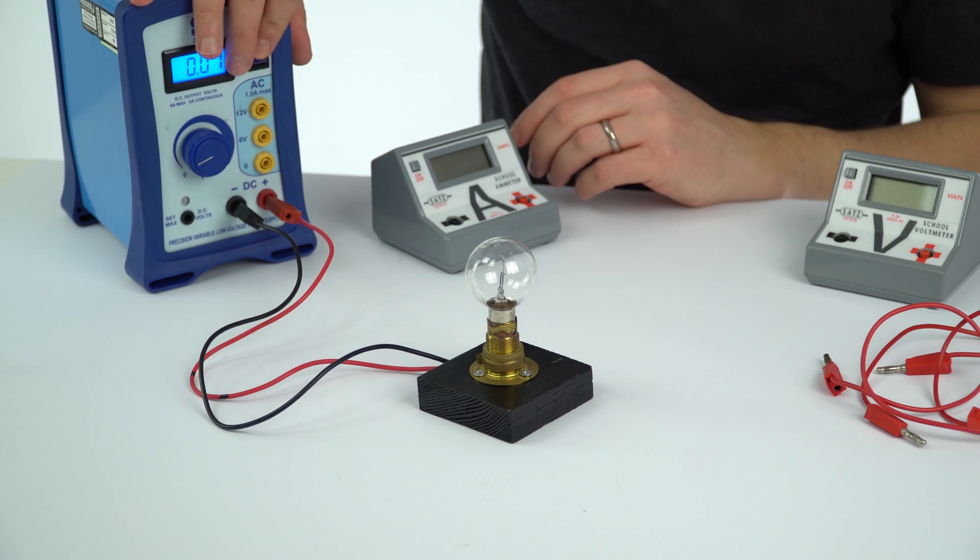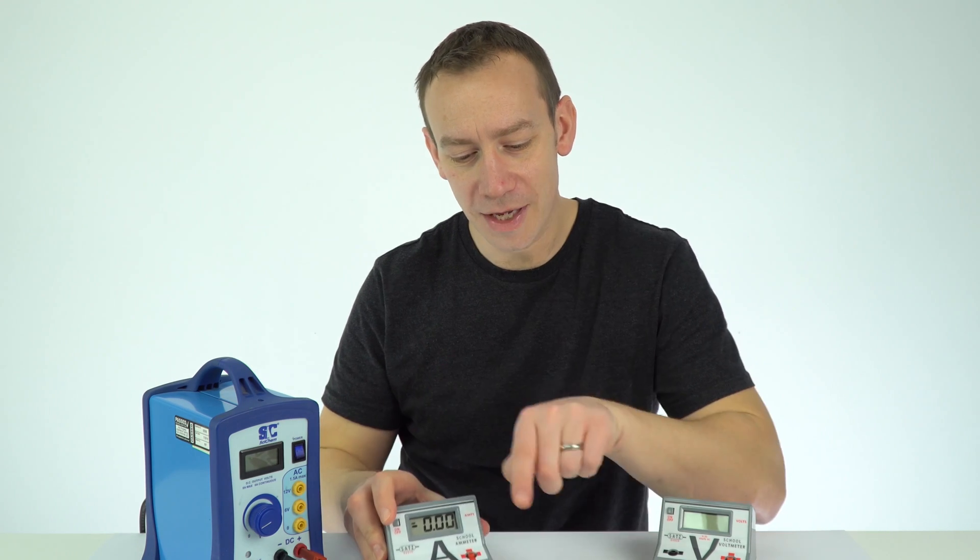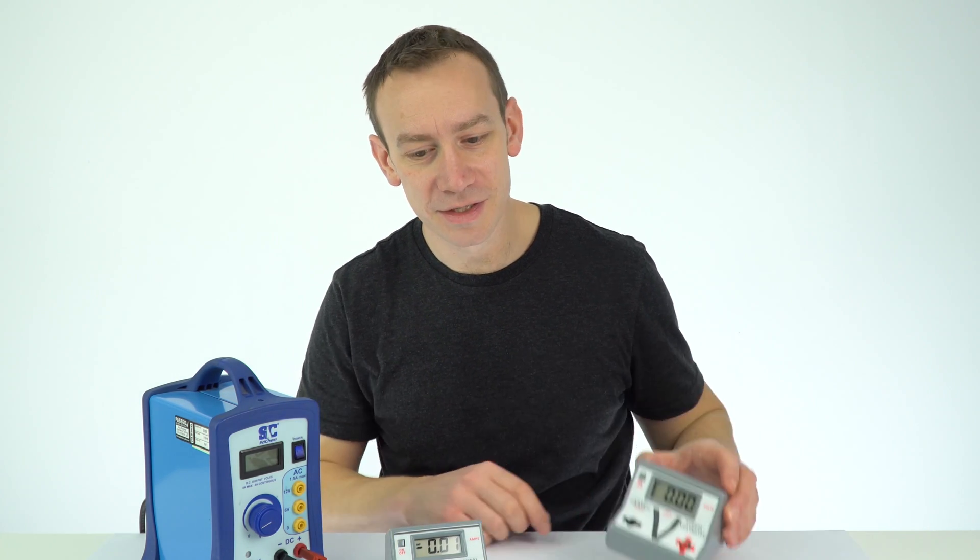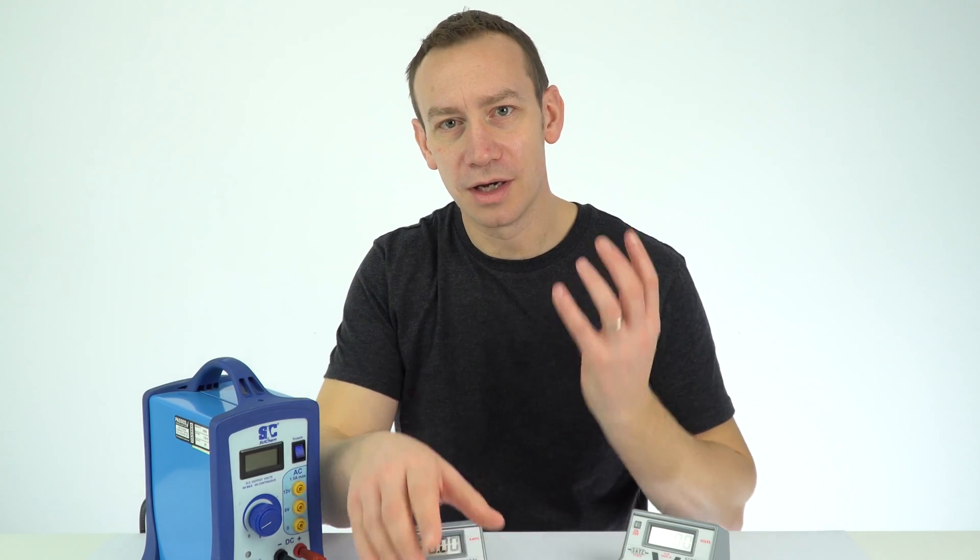Now the way we're going to set the circuit up is we have an ammeter to measure the current going through that and we have a voltmeter to measure the potential difference across it. You can set this up with a battery pack and a variable resistor but I'm going to be using the variable power supply here to actually vary the current and the voltage. We can then plot that on an IV graph.